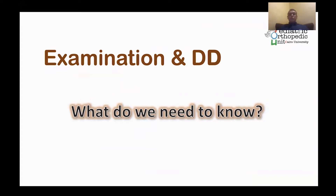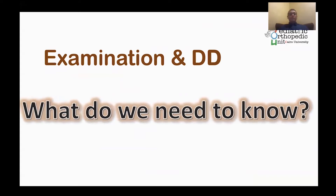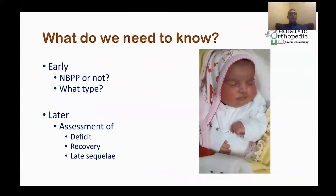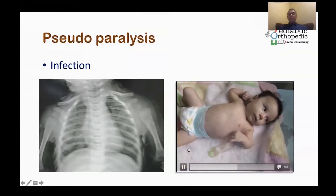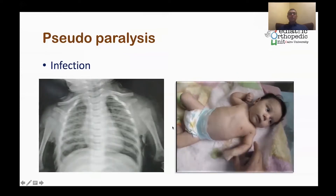During examination, what we need to know: we want to diagnose first — is it a Neonatal Brachial Plexus or not, and if it is, what type? Later assessment is of the deficit, the progressive recovery, or the presence of late sequelae. One of the most common causes that may be misdiagnosed as Brachial Plexus Palsy is infection — neonatal septic shoulder.